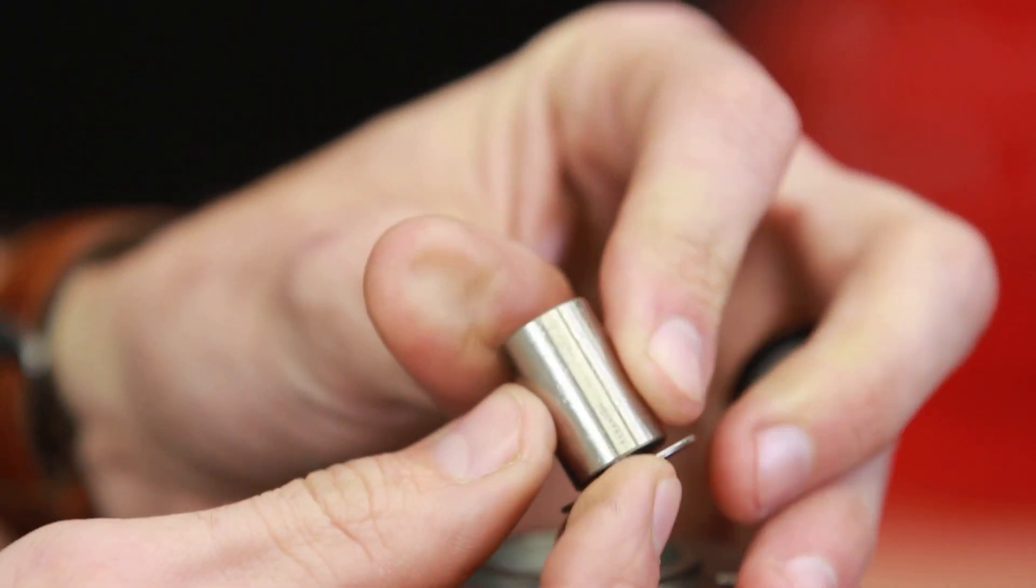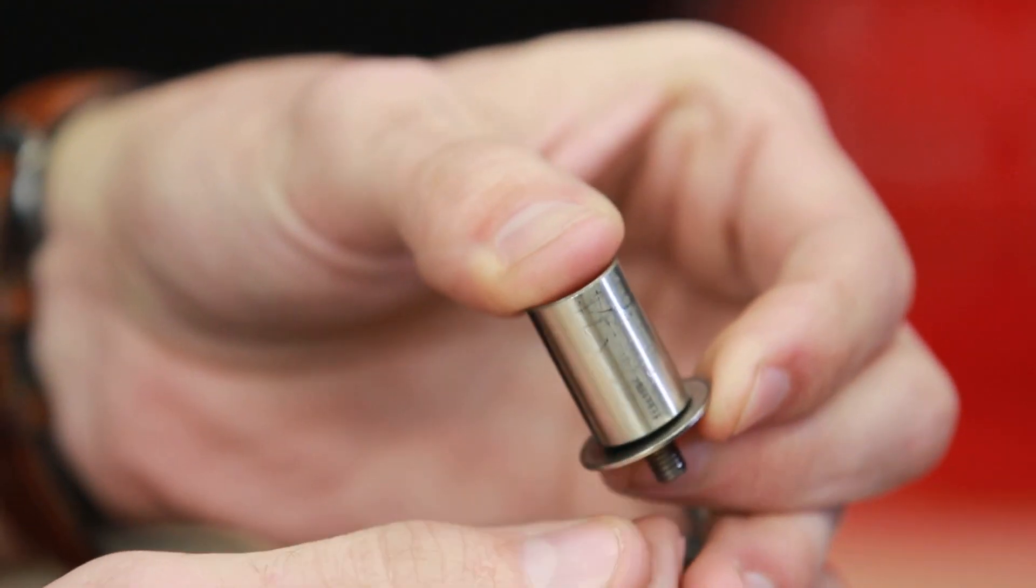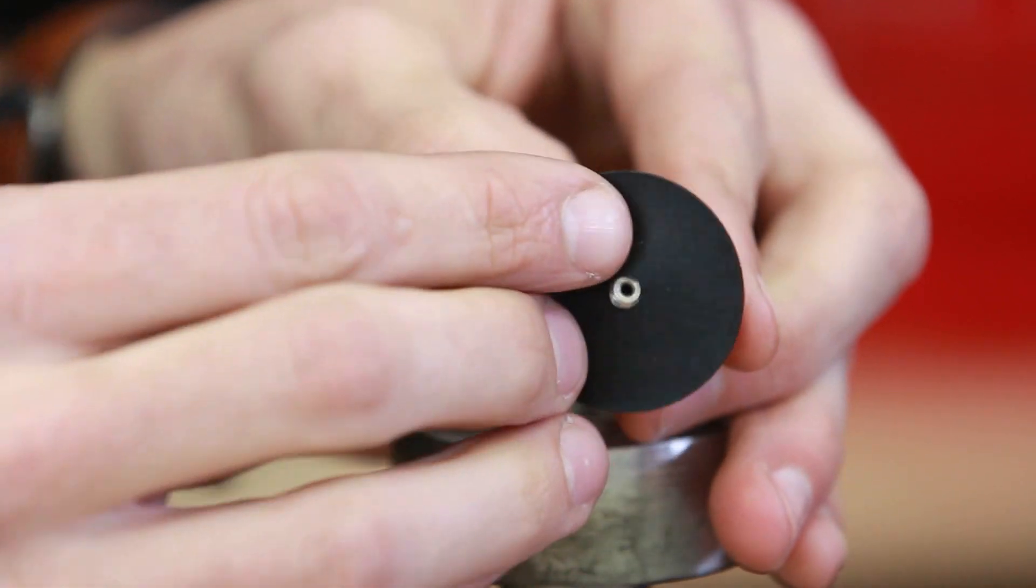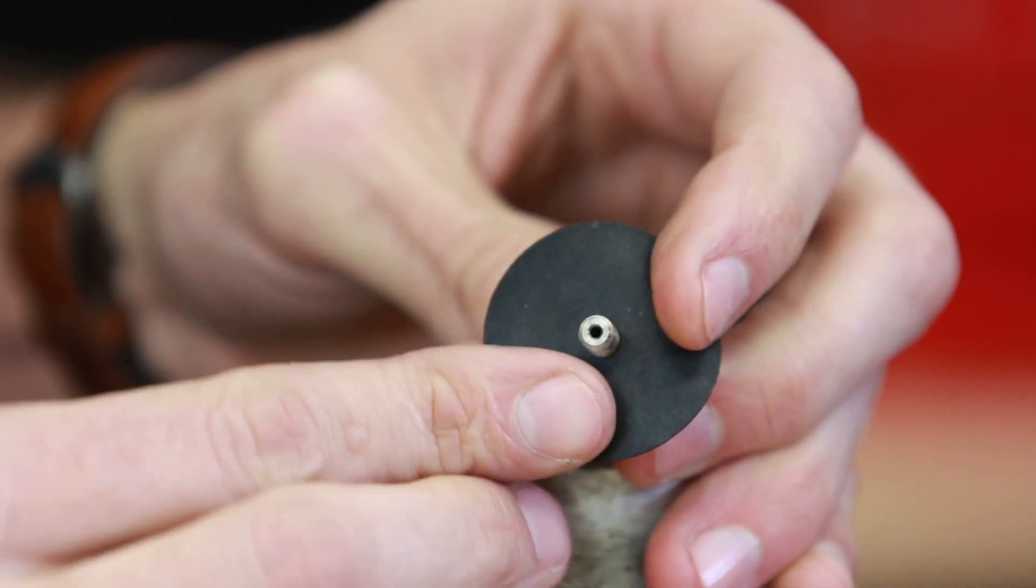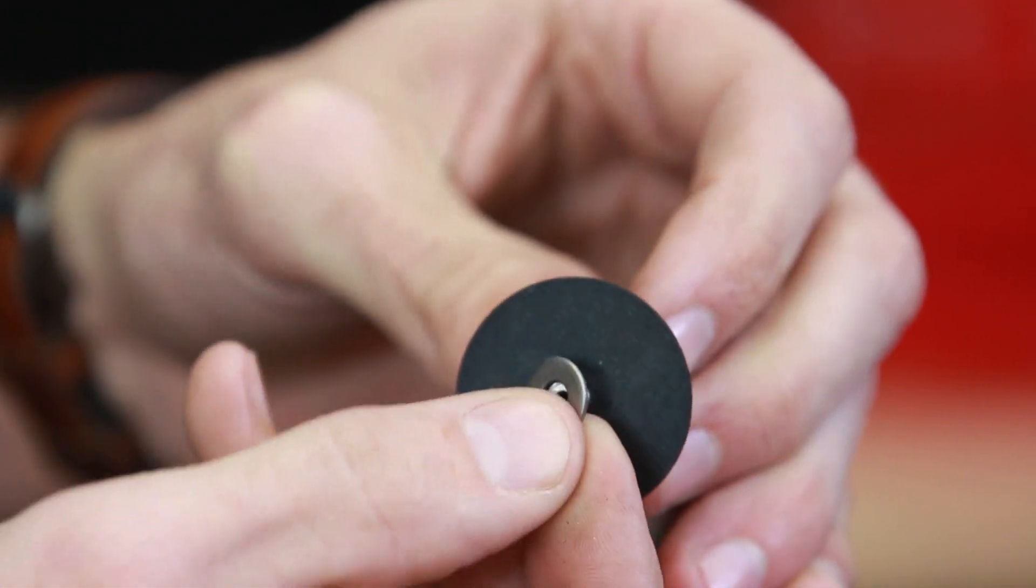Place the upper diaphragm plate on the housing with the bevel side pointed away from the diaphragm. Place the diaphragm onto the plate, then place the lower diaphragm plate on top.